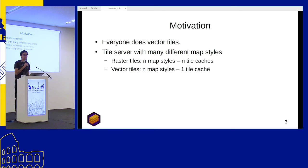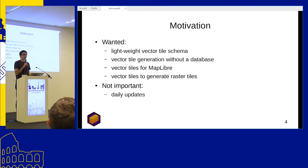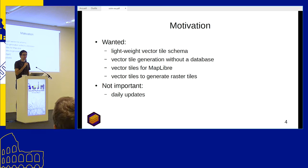N tile caches need lots of disk space. With vector tiles, you can have multiple map styles but hopefully just one tile cache for all. So what did we want? We wanted a lightweight vector tile schema, to create vector tiles without a database, to use vector tiles with MapLibre, and to create raster tiles from the vector tiles. We don't have priority on having daily updates because many clients don't ask for them and it makes things cheaper.